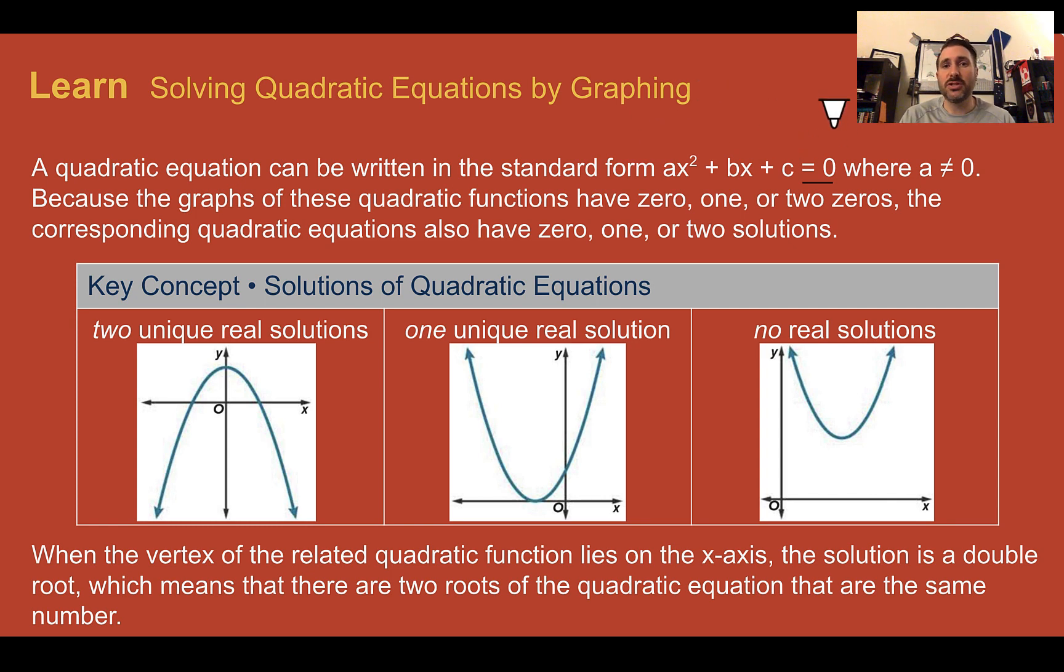So because these graphs, once we do it, are going to have zero, one, or two zeros, what that means by zero here, it means we're going to have either one, two, or none zeros if we plug in a number for x where it equals zero. Then, when we graph it, we'll either have zero, one, or two solutions.